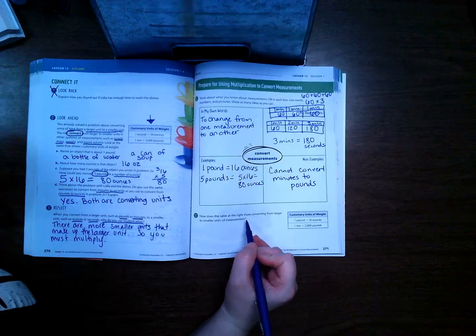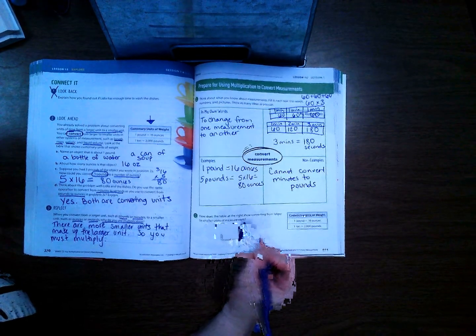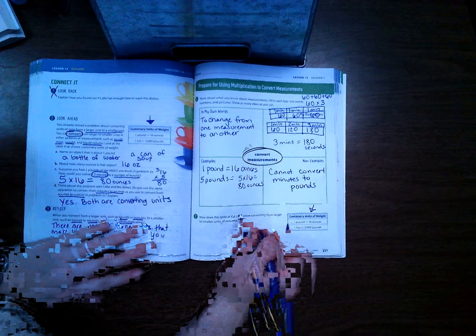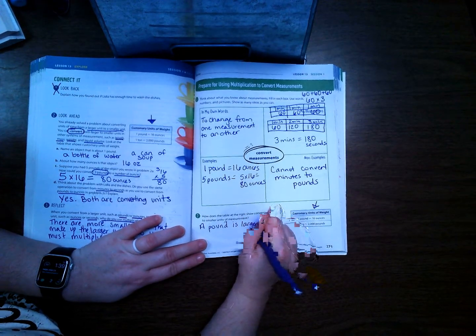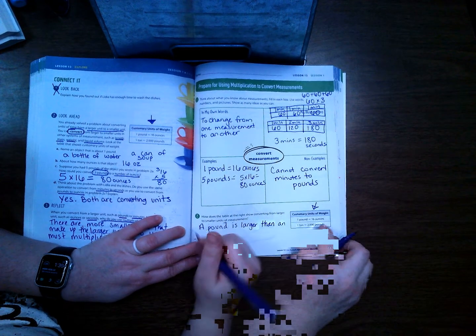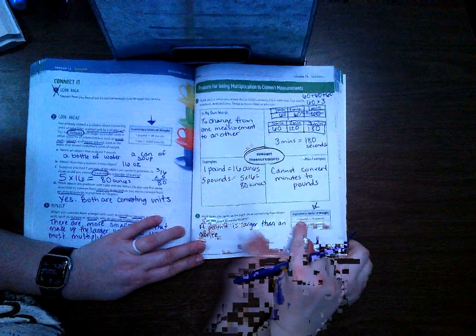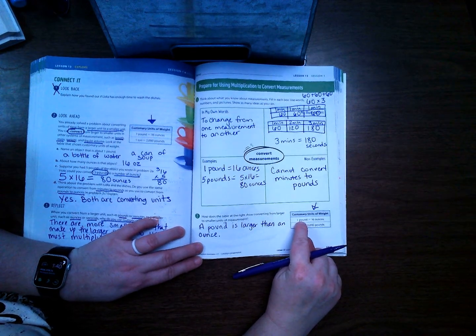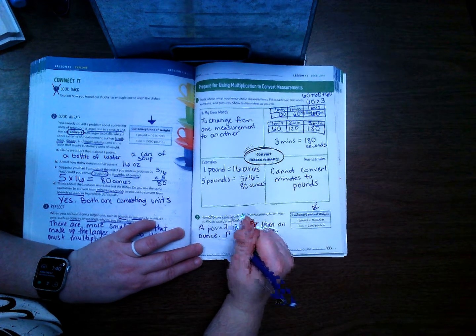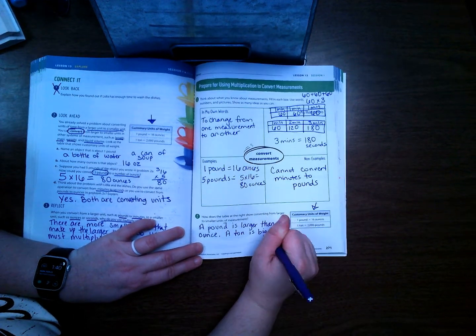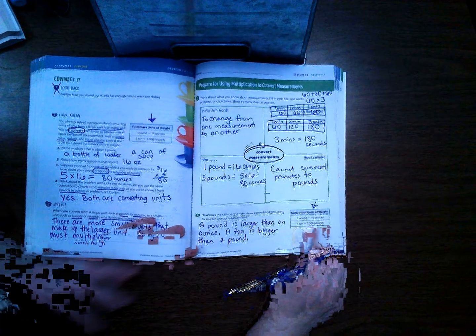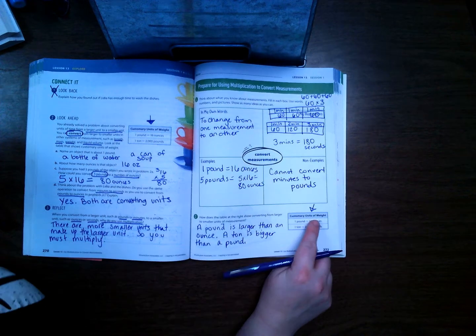Number 2, how does the table at the right show converting from larger to smaller units of measure? We are going to use this one in this case because it's just talking specifically about this one. A pound is larger than an ounce. One pound is bigger than one ounce because it takes 16 ounces to make one pound. It also shows us that a ton is bigger than a pound because it takes 2,000 pounds to make one ton. So you can convert between those measurements.